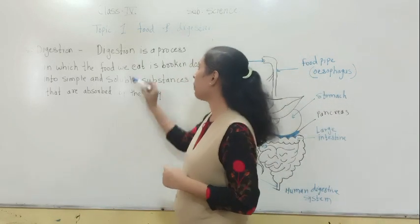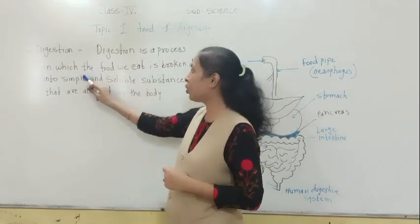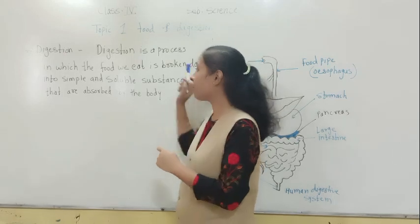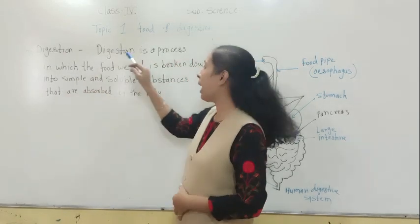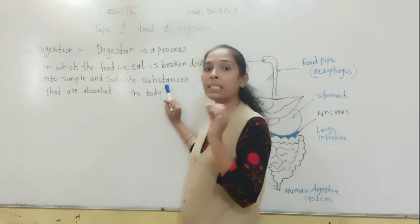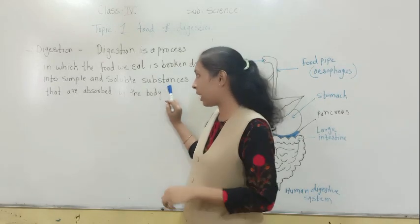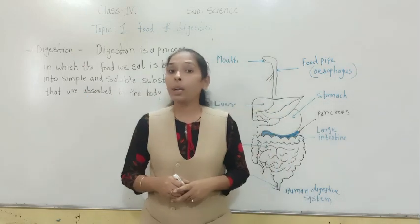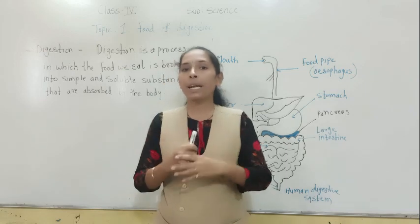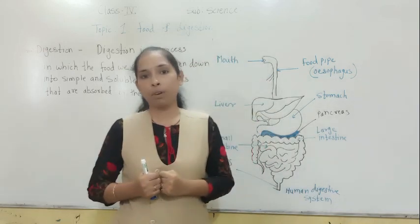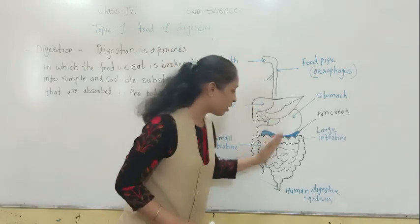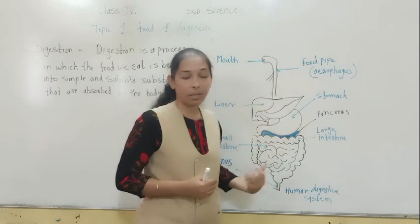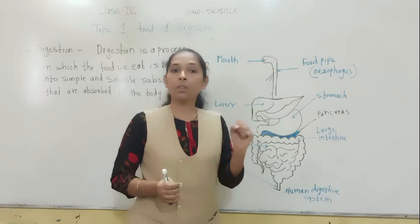So the definition of digestion is: digestion is a process in which the food we eat is broken down into simple and soluble substances that are absorbed by the body — and that process is called digestion. To perform digestion, we have a system in our body called the digestive system, with different organs called digestive organs.